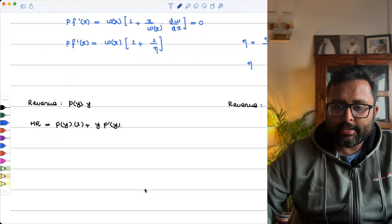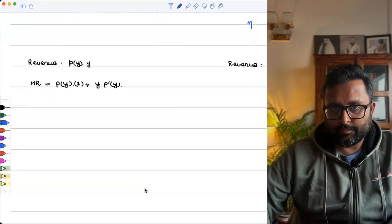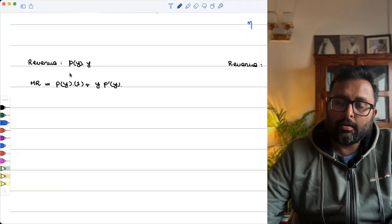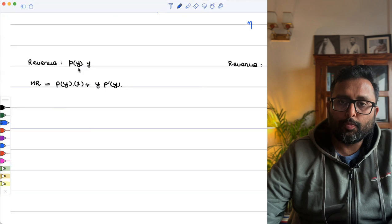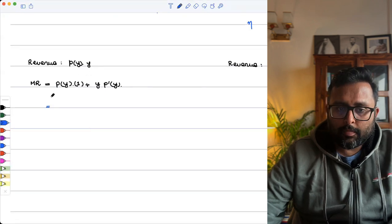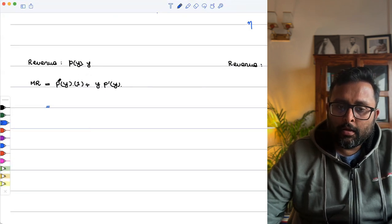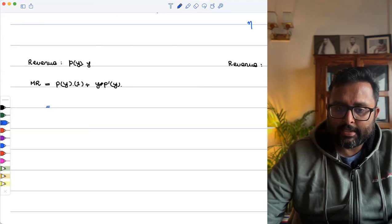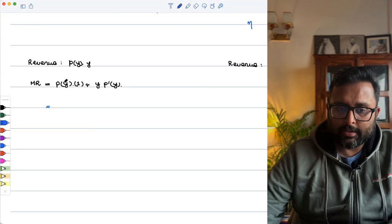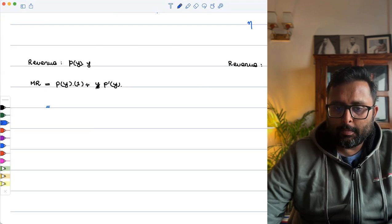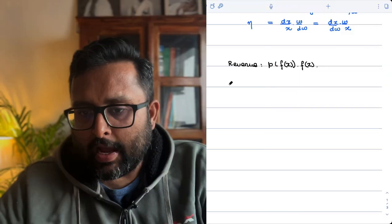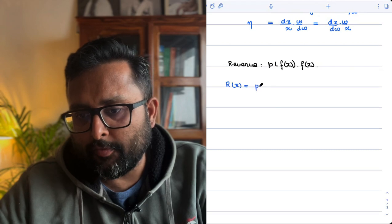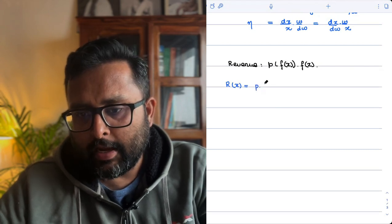We want to write this in a little different way than this. How? You know this that revenue is P, which is a function of output into output. So MR is going to be first function as it is into derivative of second plus second function as it is into derivative of first. That is PY into 1 plus Y into P dash Y. I will be writing because we have written everywhere in terms of X. So in place of P into Y, I can write this.